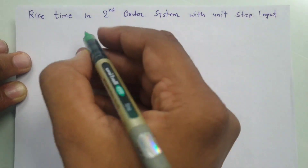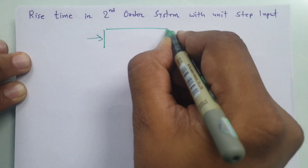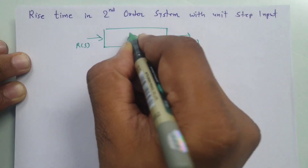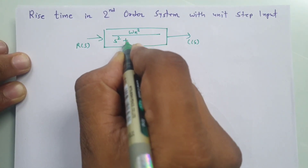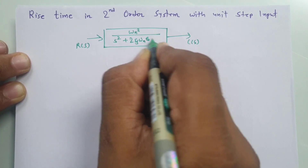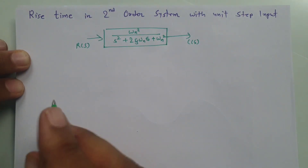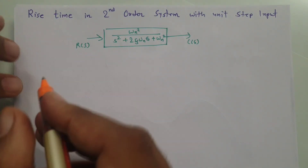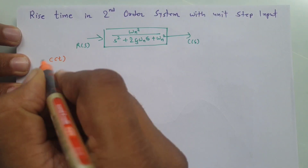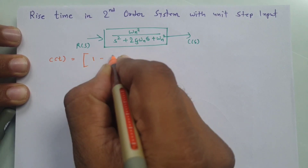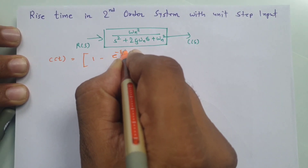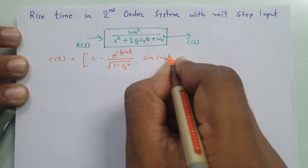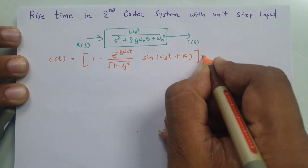Let me quickly recap where we have the second-order system with input R(s) and output C(s). The standard second-order system transfer function is ω_n² divided by (s² + 2ζω_n·s + ω_n²). Our output is C(s), and in the time domain the response C(t) equals 1 minus e^(−ζω_n·t) divided by √(1 − ζ²) times sin(ω_d·t + θ), multiplied by u(t).